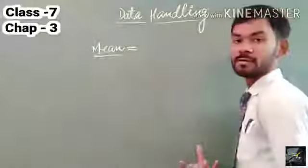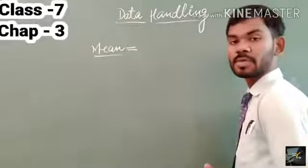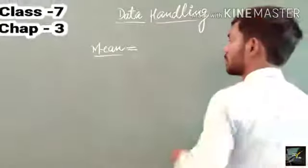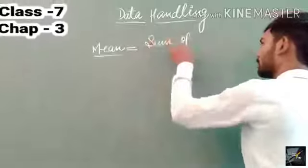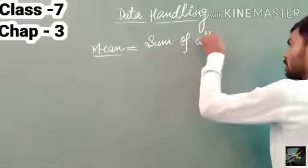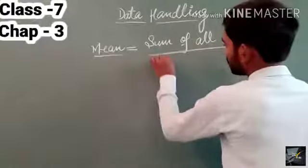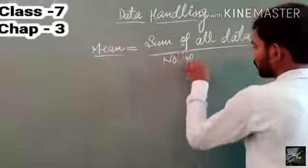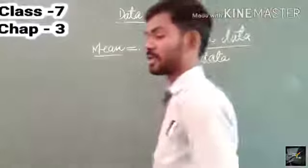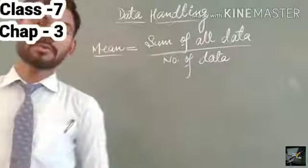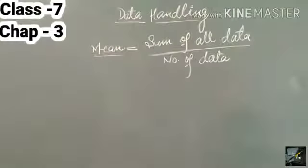First of all I need to write the formula by which we shall get the arithmetic mean of the given data. The formula says: mean equals sum of all data divided by number of data. This is the arithmetic mean formula, and here we are going to find the mean of some data using this formula.